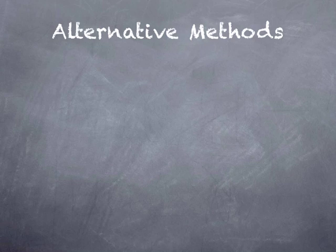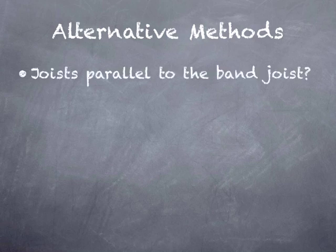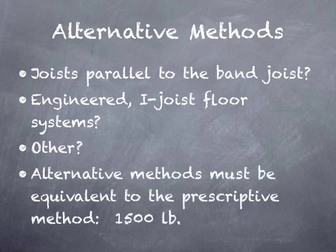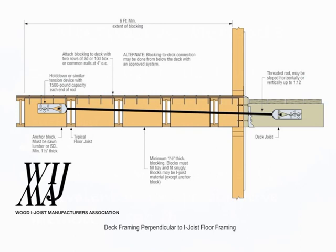Not all conditions will be able to meet the lateral load requirement using the prescriptive detail. For example, the detail only applies to solid sawn lumber with joists perpendicular to the band joist. What if the joists are parallel to the band joist, or what if they're engineered I-joist floor systems? Alternative methods must be equivalent to the prescriptive method. So the arbitrary use of 1,500 pounds — a value that truly has no calculative method for its existence — caused some problems in the engineered wood world. The Wood I-Joist Manufacturers Association detail shows that when joists run parallel to the band joist with engineered wood joists, meeting the 1,500-pound requirement requires six feet of blocking, a long all-thread rod, and nailing the floor sheathing down to all of that blocking.